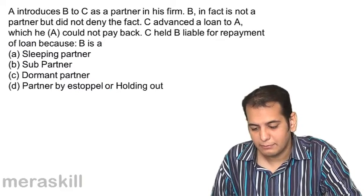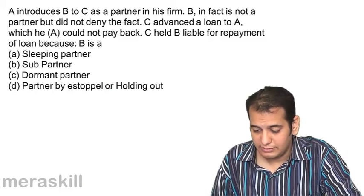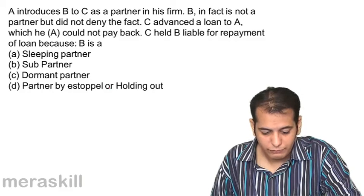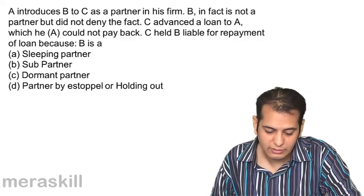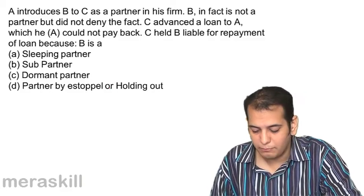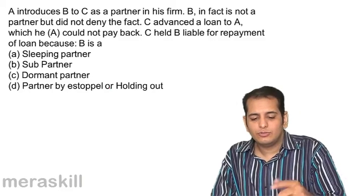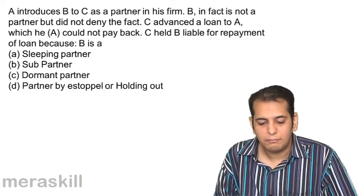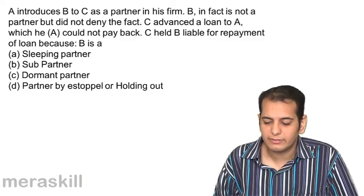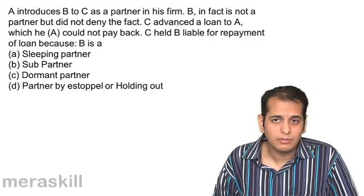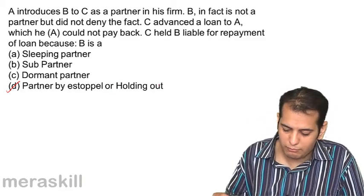A introduces B to C as a partner in the firm. B is in fact not a partner, but did not deny this fact. C advanced a loan to A, which A could not pay. C held B liable for repayment of the loan. Options: sleeping partner, sub partner, dormant partner, partner by estoppel/holding out. This is a clear case of partner by estoppel/holding out — B is not a partner in the firm, but he is projected to be the partner and does not deny this fact. So he will be liable for whatever transactions have been done representing himself as a partner.